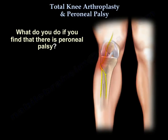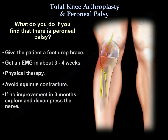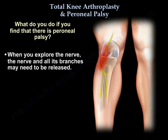If you find peroneal nerve palsy, remove the dressing to release any compressive dressing and then flex the knee. Give the patient a foot drop brace, get an EMG in about three to four weeks, provide physiotherapy, and try to avoid equinus contracture. If there is no improvement in three months, then explore and decompress the nerve, releasing the nerve and all its branches as needed.